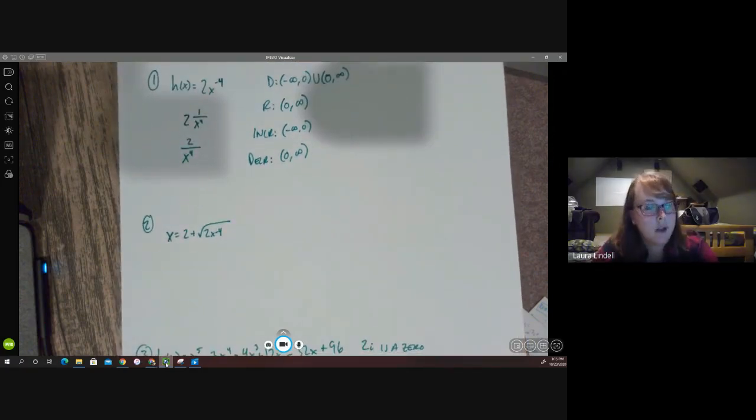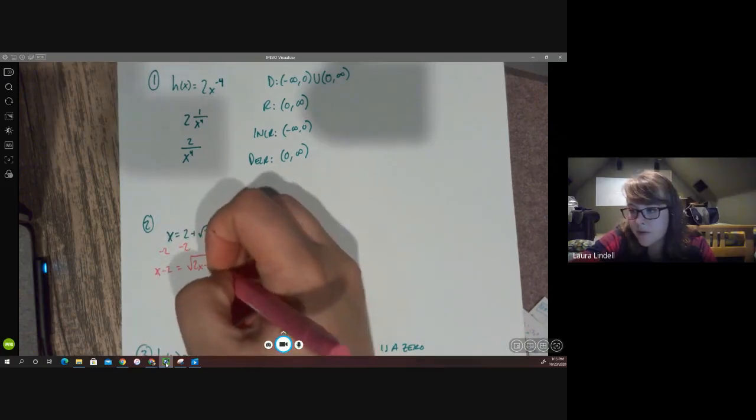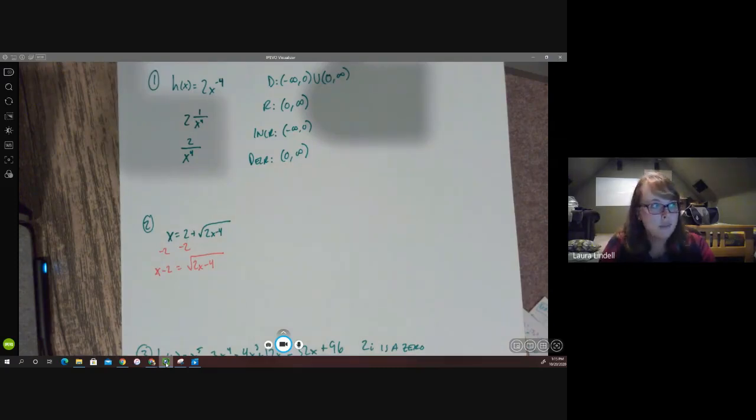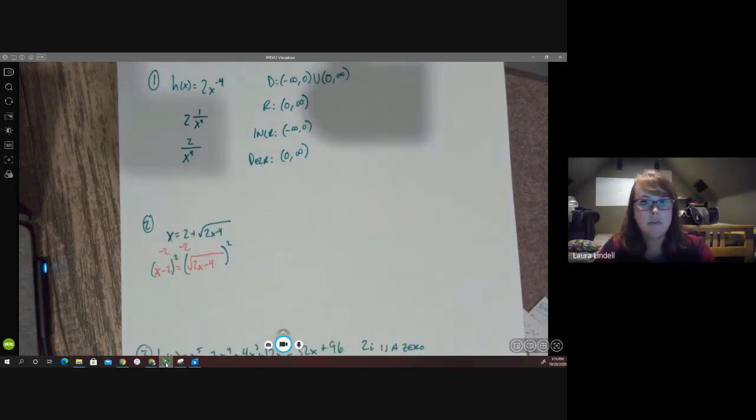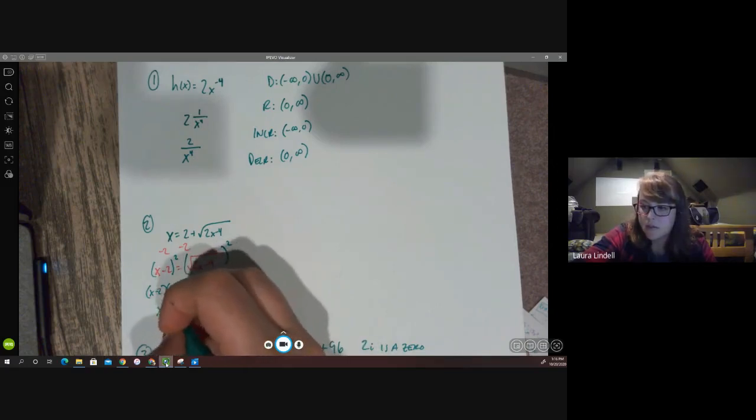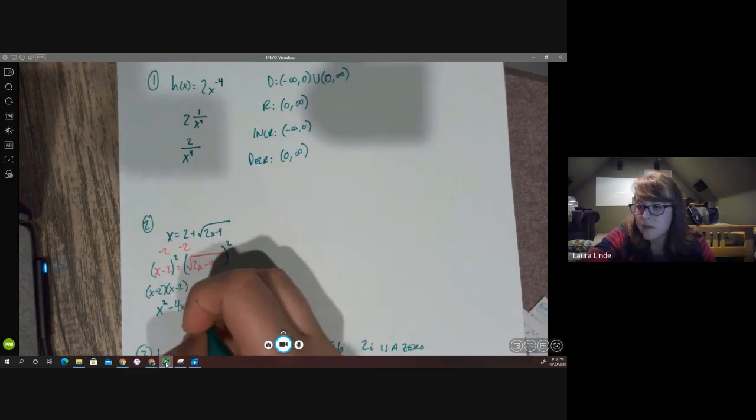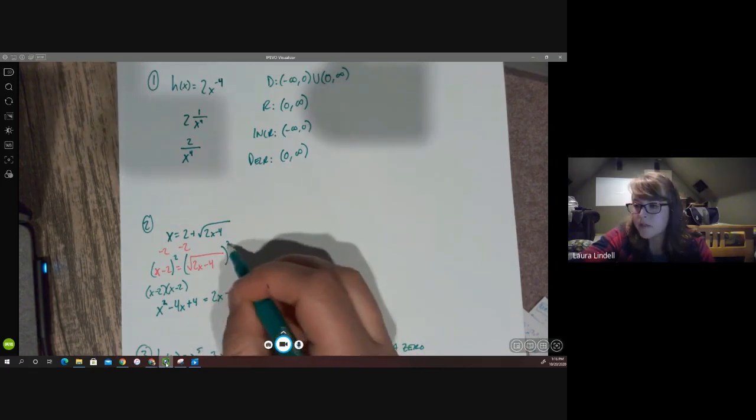Number two, we're going to need to square this thing at some point in order to solve it. But before we do that, I want to move everything that doesn't have a square root in it onto the other side. So we're going to subtract two from both sides and get x minus two over here equals the square root of 2x minus four. Then we can go ahead and square both sides. But when I square the left-hand side, be careful. Make sure you do x minus two times x minus two. Don't just distribute the square to these and call it good. So x minus two times x minus two gives us x to the second, x squared, minus 4x plus four. And then over here, we're just left with 2x minus four because the square cancels out the root.